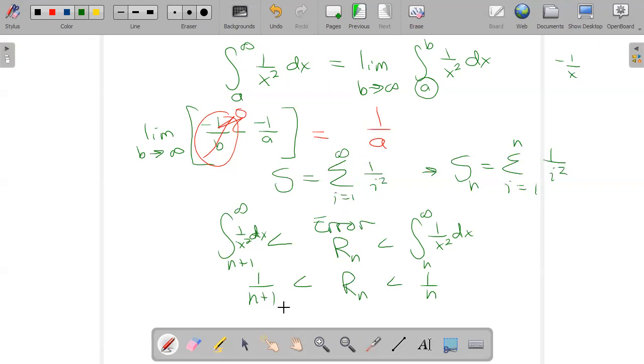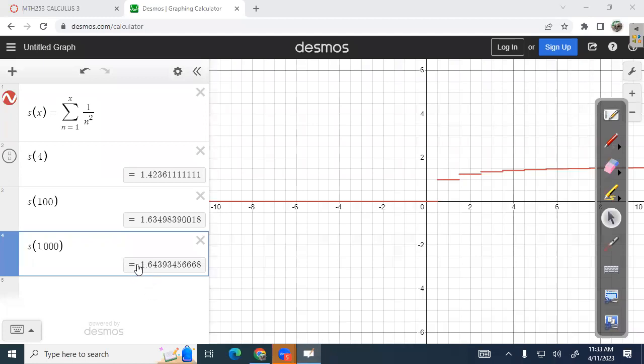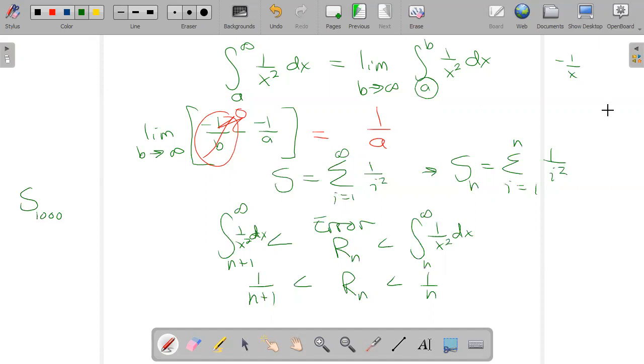A moment ago, I found the partial sum for the thousandth one. So I determined that S sub 1000 was about, just copy those. All those decimals. How many of them are reasonably accurate? Okay, so this is what Desmos says. Some of these decimal places are accurate and some are not.